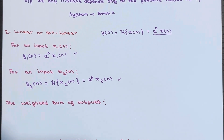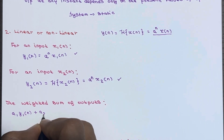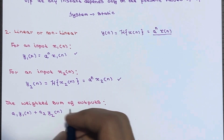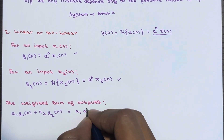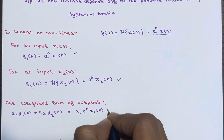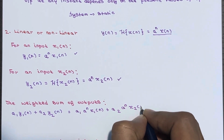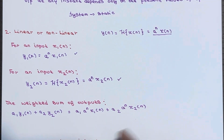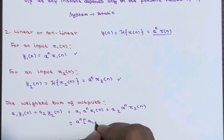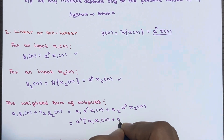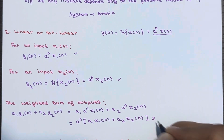The weighted sum of outputs is: a1·y1(n) + a2·y2(n) = a1·(a^n · x1(n)) + a2·(a^n · x2(n)), which simplifies to a^n · (a1·x1(n) + a2·x2(n)).